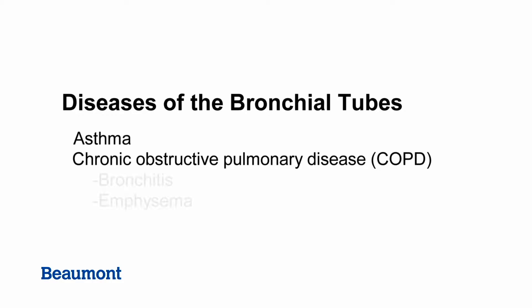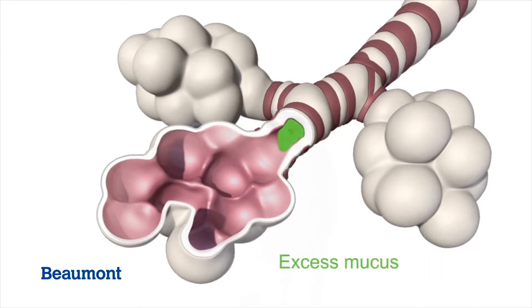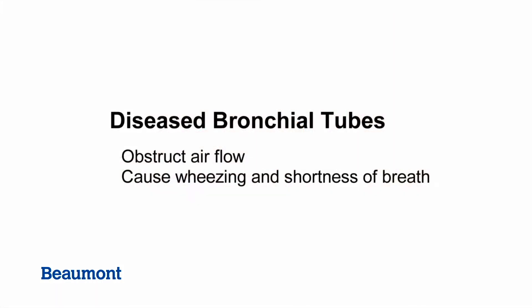COPD includes both bronchitis and emphysema. In these diseases, inflammation, excess mucus production, and spasm of the tiny muscles that surround the smallest bronchial tubes combine to affect normal breathing. The tiny muscles that surround the small airways become enlarged and constricted in the presence of inflammation. These processes obstruct airflow, causing symptoms such as wheezing and shortness of breath.